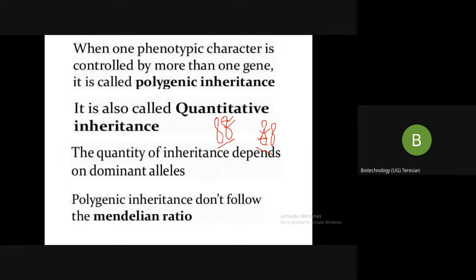Environmental factors also play an important role in determining the trait. For example, skin color is determined by the genes we have inherited, but physical environmental features also play an important role — how much we are exposed to certain temperatures also defines the color of the skin. This is the meaning of how environment influences skin color along with the genes we have inherited.